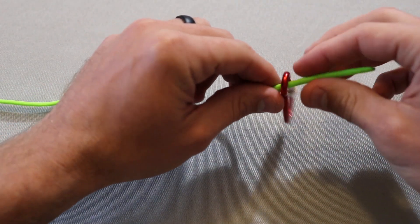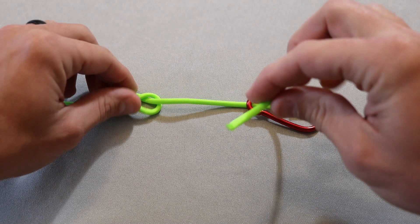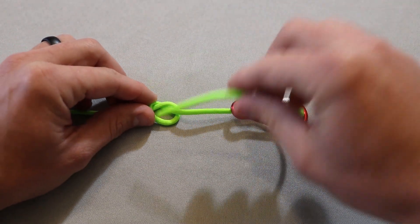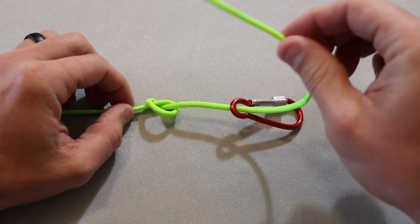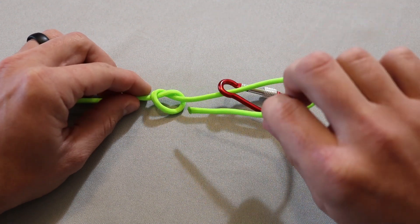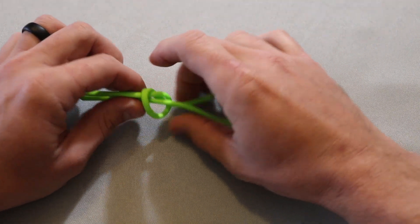Pass your line through the eye of your hook. I'm using a little carabiner for this. Make sure you didn't tighten that down, and then you're going to pass the line through that, your tag end.